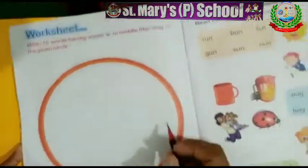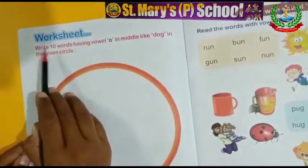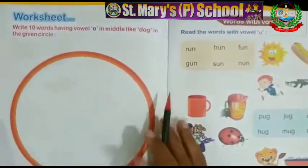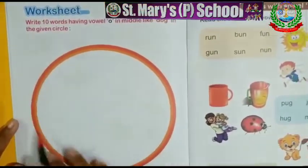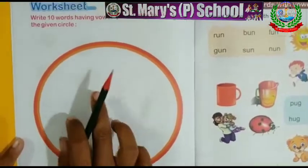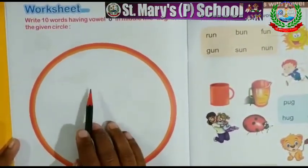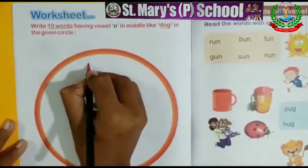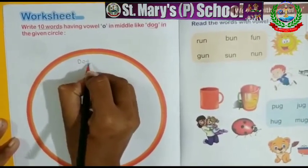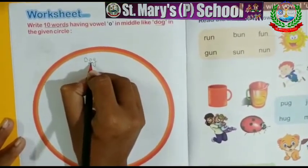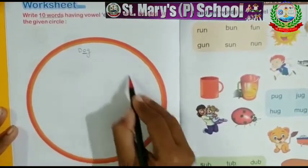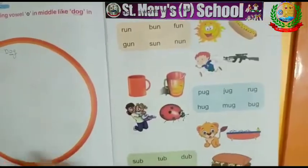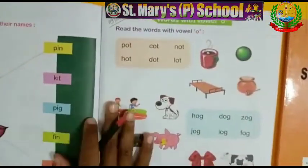Page number 16 पे देखते हैं, क्या work है? Worksheet: Write 10 words having vowel O in the middle like dog in the given circle. हमें क्या करना है? यह जो circle दिया हुआ है, इनमें हमें vowel O से आने वाले words को लिखने हैं — 10 words. यहाँ एक example दिया हुआ है: dog — D, O, G. बीच में vowel O आए, ऐसे आपको 10 words लिखने हैं इस circle में.